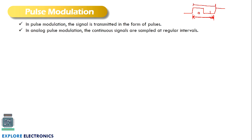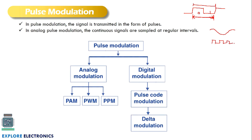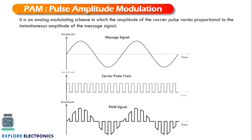This kind of signal is used as a carrier in pulse modulation. In analog pulse modulation, a continuous signal is given as the modulating signal, and the carrier we use is like a train of pulses. In analog pulse modulation we have PAM, PWM, and PPM. In digital pulse modulation we have PCM — pulse code modulation — and delta modulation.